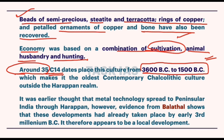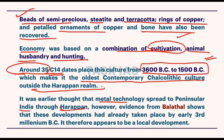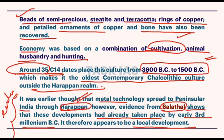This makes Ahar the oldest contemporary Chalcolithic culture outside the Harappan area. It was earlier thought that metal technology spread to peninsular India through Harappan influence, but later evidence from Balathal showed these developments had taken place earlier, by the early third millennium BC. It therefore appears to be a local development — this evaluation point can be mentioned separately as 'Origin and Dispersal of Ahar Culture,' noting that excavations at Balathal contradict diffusionist theories, suggesting indigenous development.